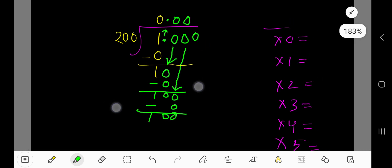Bring down this 0. Then you are getting 1000. 1, 0, 0, 0. Let me write. 200 goes into 1000 how many times?